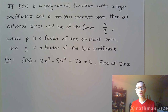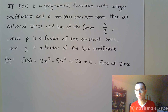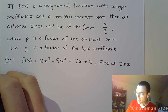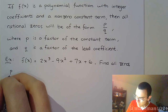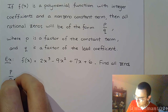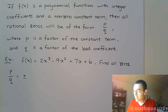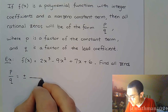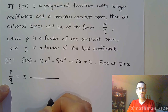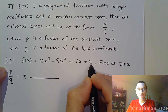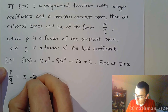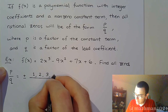We're going to use synthetic division to turn that polynomial from degree 3 into degree 2, and then we'll use our methods for solving quadratic equations to finish getting the other two zeros. Since we don't have any information, we're going to start with what P over Q could be. P over Q — and I'm going to write a plus or minus in front because we don't know the signs — so P is going to come from factors of 6. Those factors are 1, 2, 3, and 6.